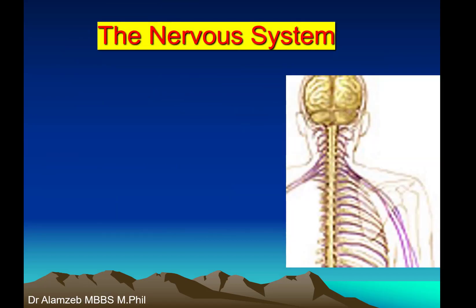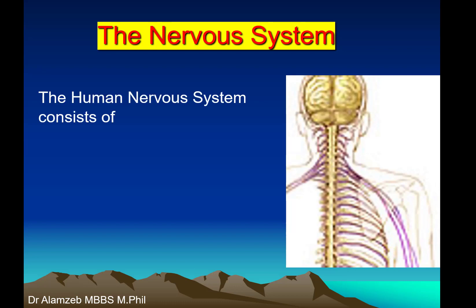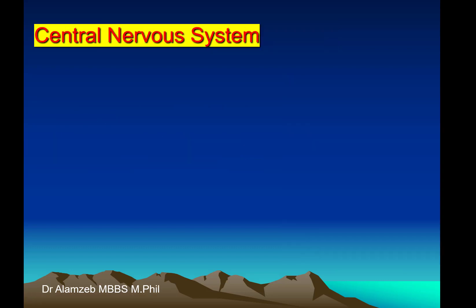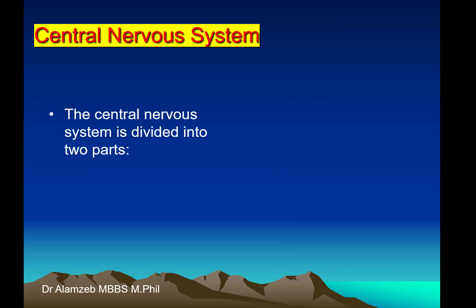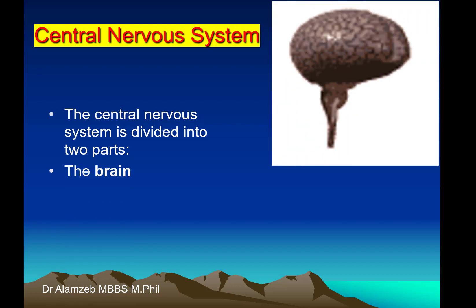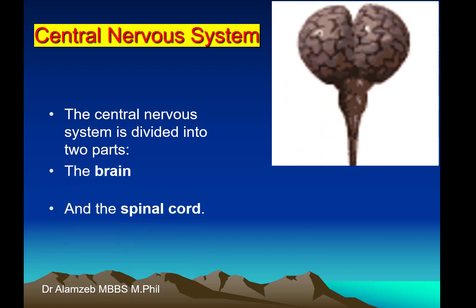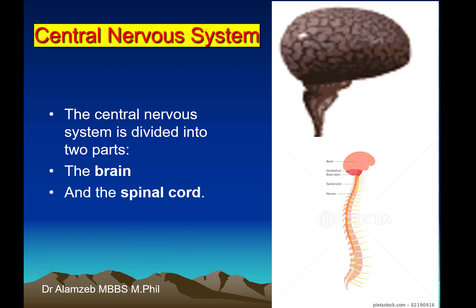The Nervous System of the human being consists of two parts: the Central Nervous System and the Peripheral Nervous System. The Central Nervous System is divided into two parts: the Brain and the Spinal Cord.